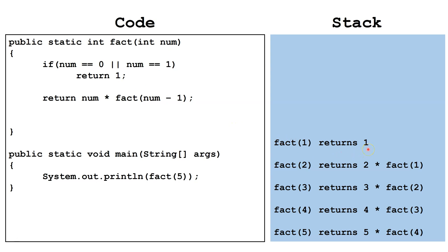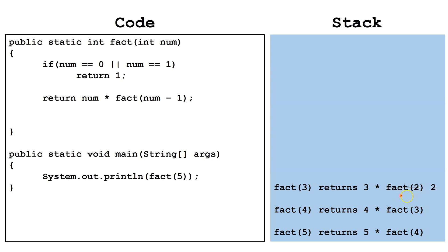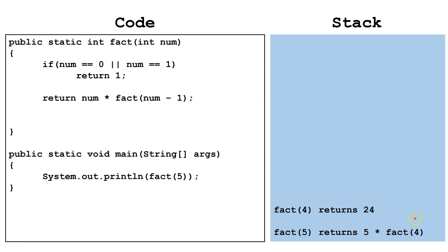Now we're going to plug these values in as we pop items off the stack. We know fact(1) returns one, so we cross it out, put in the one, and pop the top thing off the stack. Next, two times one is two, so fact(2) will return two — pop this off the stack and replace with two. Then three times two is six, so fact(3) will return six. Four times six is twenty-four, so fact(4) will return twenty-four. Twenty-four times five is one hundred and twenty, so the number one hundred and twenty gets returned to our main method, which will be outputted.